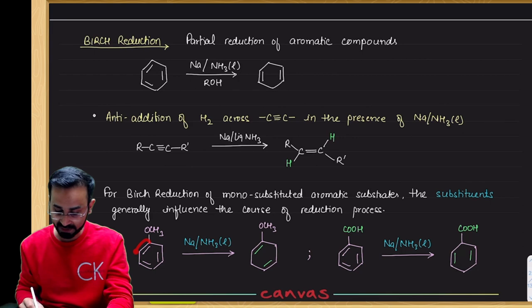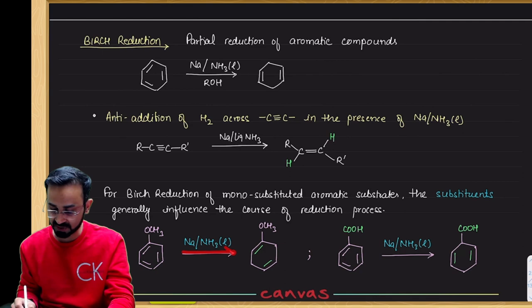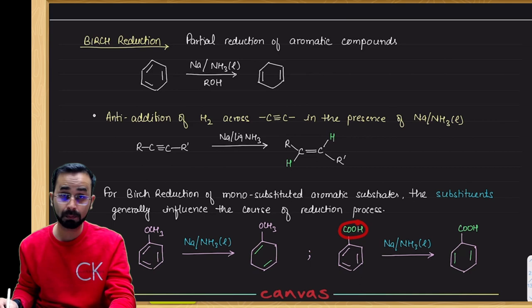When a donating group is on benzene, the double bond adjacent to it is not reduced. This results in parallel double bonds. So you will have Birch reduction.